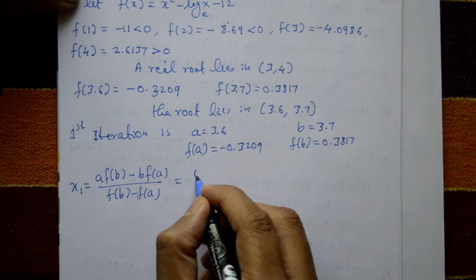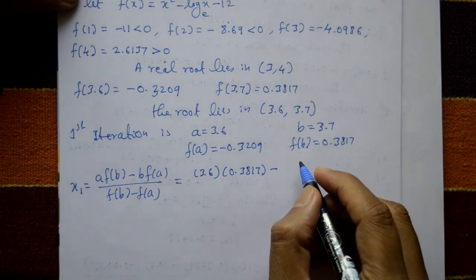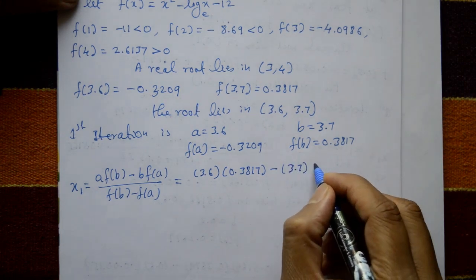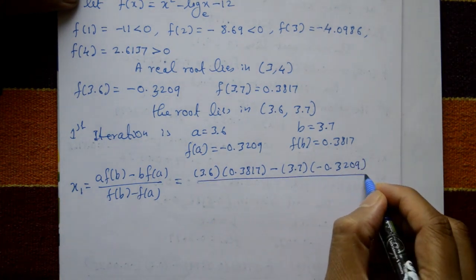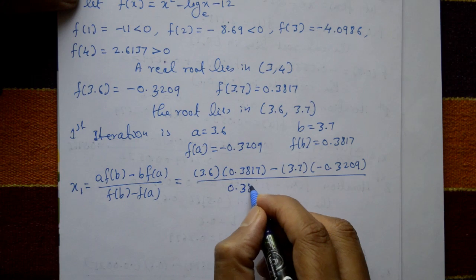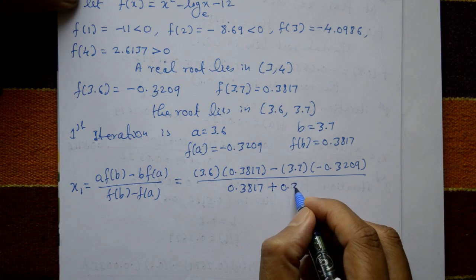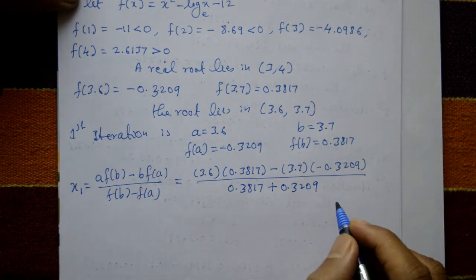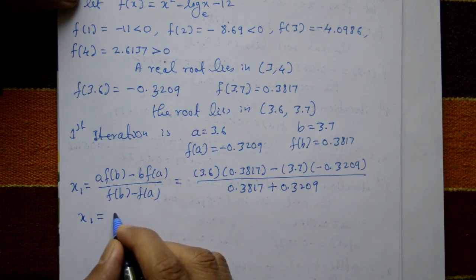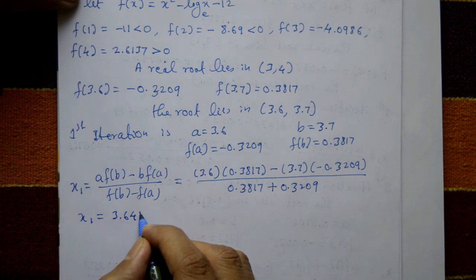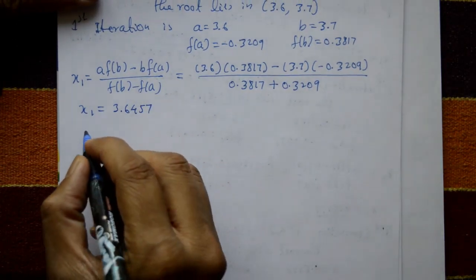Substituting values: a = 3.6, f(b) = 0.3817, b = 3.7, f(a) = minus 0.3209, divided by f(b) minus f(a) = 0.3817 minus (minus 0.3209). Using a calculator, x1 = 3.6457.